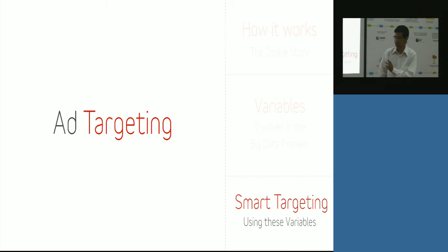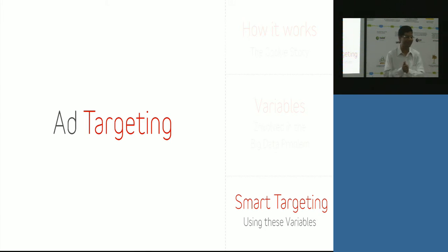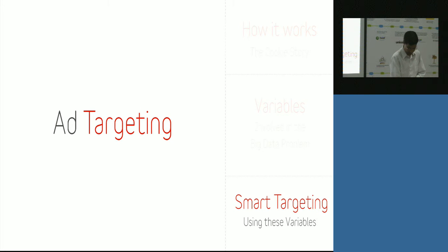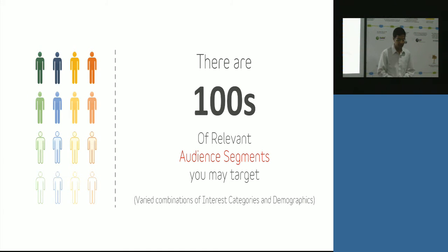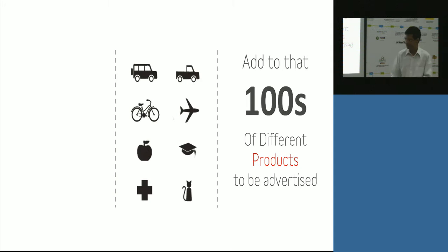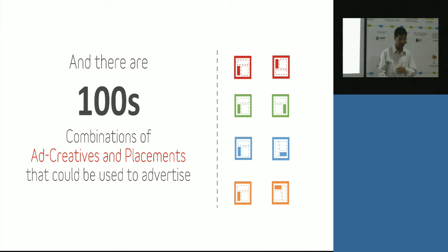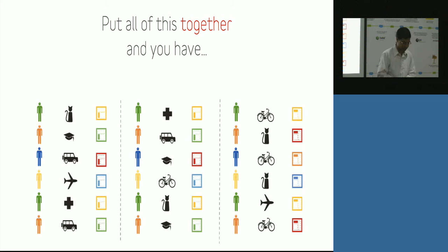Coming to the third part — the smart targeting base. How do you actually make sense out of all of this? Great, you captured all this data, you have two billion records in your database. But how do you use it? There are hundreds of audience segments — user personas — hundreds of products you could potentially sell to the person, and hundreds of combinations of ad creatives and placements. If you try a combination of a hundred times a hundred times a hundred, you're going to run into a lot of combinations, because you need to map the persona to the product, to the creative, to the placement.